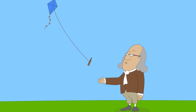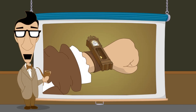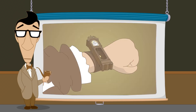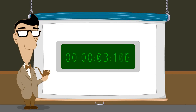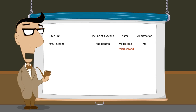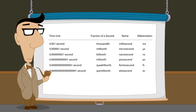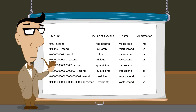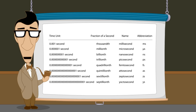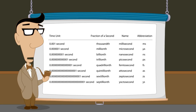Hundreds of years ago, time measurements much smaller than a second would have been difficult or impossible. Today, engineers and physicists routinely work with measurements of tiny fractions of a second. In fact, we now have names for these units like millisecond, microsecond, nanosecond, picosecond, femtosecond, attosecond, zeptosecond, and yoctosecond. Unfortunately, numbers with lots of zeros can become confusing and hard to work with. This is why scientific notation was invented.